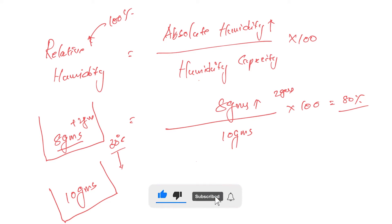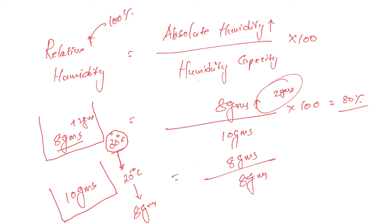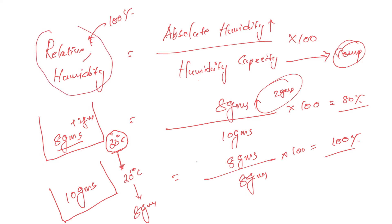Let's say absolute humidity is 8 grams, but the temperature of this unit volume of air drops to 25 degrees Celsius. At lower temperatures the capacity is lower — at 25 degrees Celsius the capacity is 8 grams. So relative humidity becomes 100 percent. When temperature changes, humidity capacity changes, and relative humidity reaches 100 percent. This can happen either by adding more water vapor or by dropping the temperature.